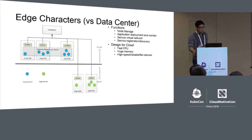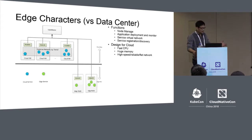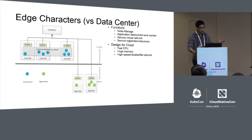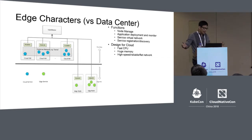Kubernetes is designed for the cloud and data center, where servers have fast CPUs, large memory, and high-speed, reliable networks — and each VM can connect to another VM without issue. But in the edge, we have significant challenges.